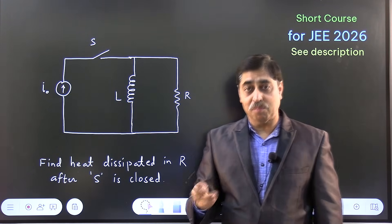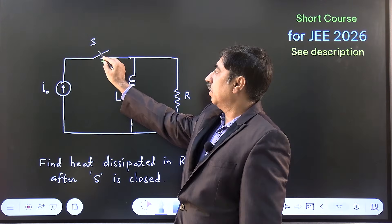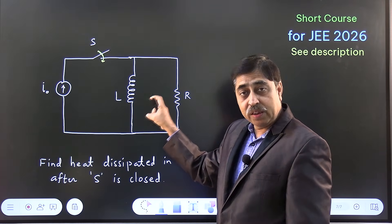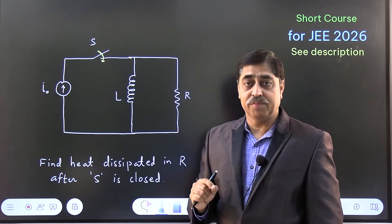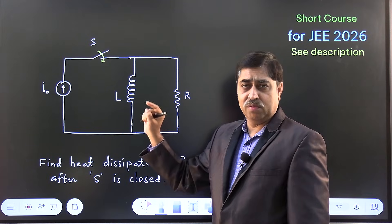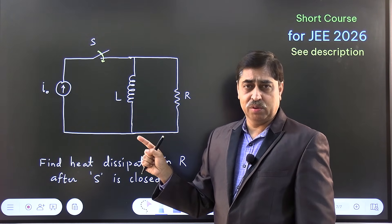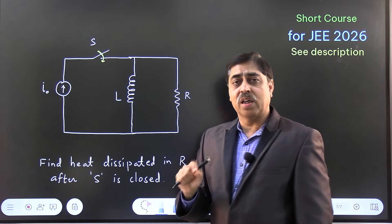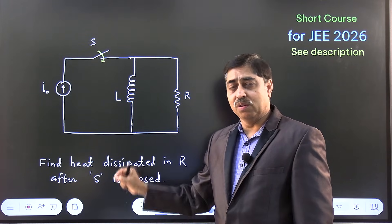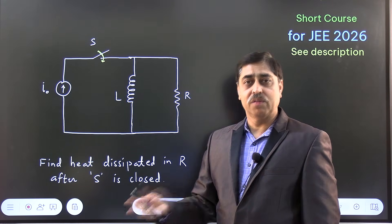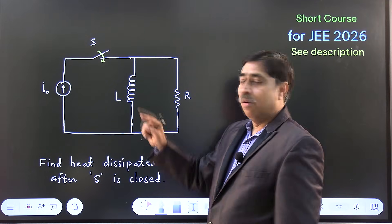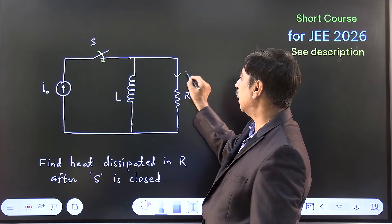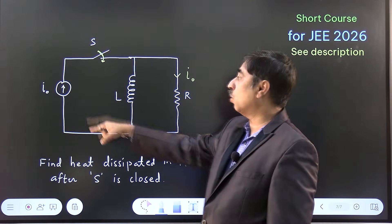As I proceed with the solution — the moment you close this switch, the current in this inductor will start increasing. Originally the current is zero. Just after this switch has been closed at time t = 0, the current through this inductor is 0. So what is the current through the resistor? Obviously, if the current through the inductor is zero, then the current through the resistor is I₀ — the whole current is passing through it.